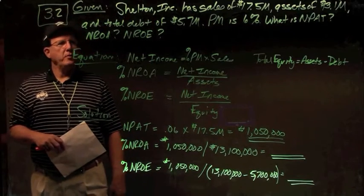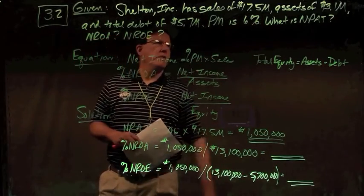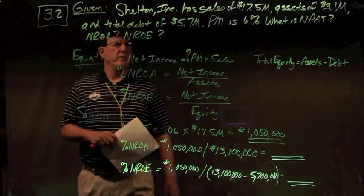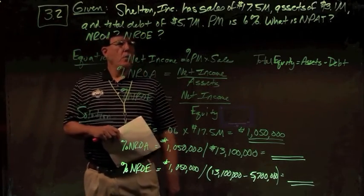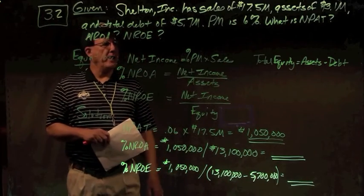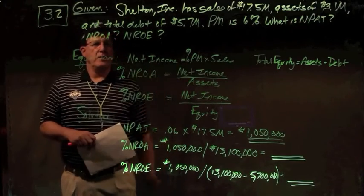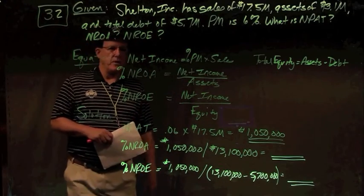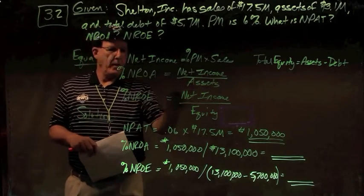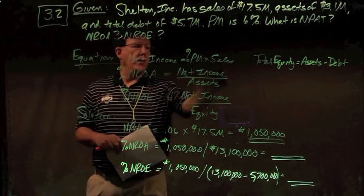In problem 3.2, we have Shelton Incorporated with sales of $17.5 million, assets of $13.1 million, and total debt of $5.7 million. Their profit margin or net return on sales is 6%. We need to find their net income, percent net return on assets, and net return on equity. First, net income is our profit margin times our sales figure.